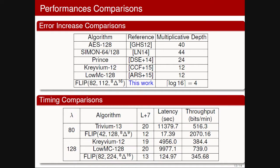For timing comparison, we used the HElib library, specifying the homomorphic capacity we want to leave in our ciphertexts — the L+7 column means L levels for the symmetric decryption and 7 levels for Alice's application. We are always better in latency for both the 80-bit and 128-bit security versions. For throughput, our 80-bit version is the best, but for 128-bit security we are about twice lower than LowMC and comparable to Trivium. In that case, we use many ciphertexts and multiplications, so without optimization we are not as good as other constructions.